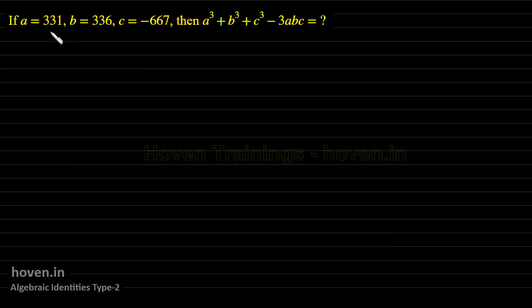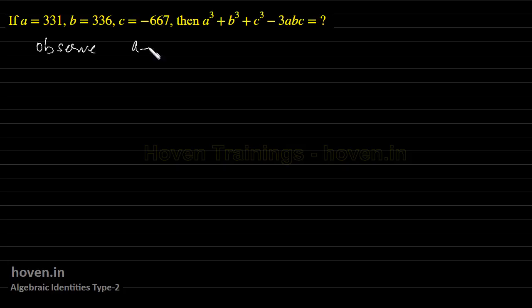Next example: if a is 331, b is 336, c is minus 667, then a cubed plus b cubed plus c cubed minus 3abc is what? We can observe that a plus b plus c equals 331 plus 336 minus 667, which is equal to 0.